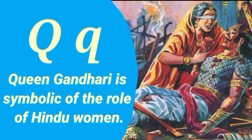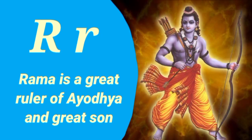Q is for Queen Gandhari, who is symbolic of the role of a Hindu woman. R is for Rama, who is a great ruler of Ayodhya.